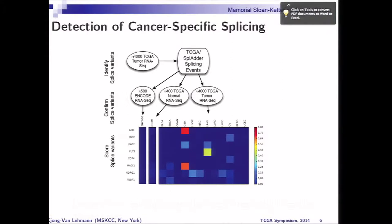In order to find cancer-specific splicing events, you can see here a map where we have broken down the splicing events into specific tumor types and sorted them. Each color represents the fraction of samples which support the specific exon skip. On the left, you can see a comparison to whether we see that particular event in the ENCODE data or in the normal RNA-seq data available from the TCGA. Unfortunately, there's not much of the matched normals available, but you can definitely see a bunch of cancer-specific, and in some cases possibly tissue-specific, events of alternative splicing.